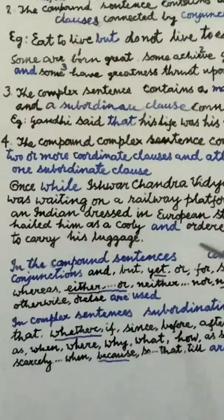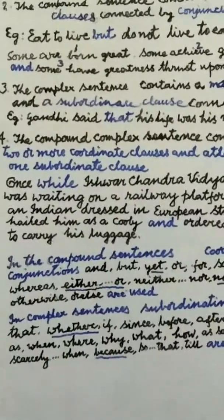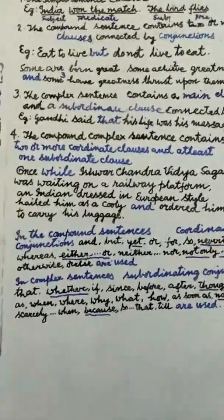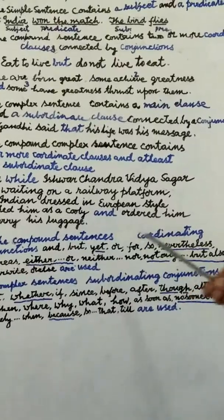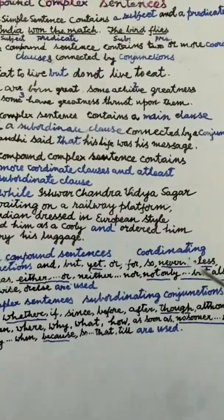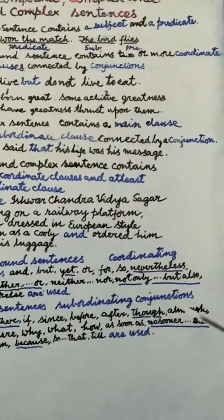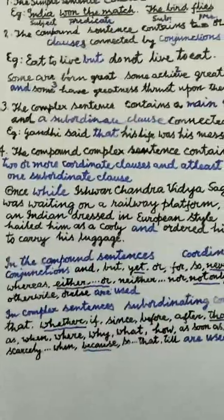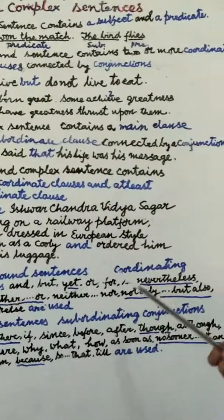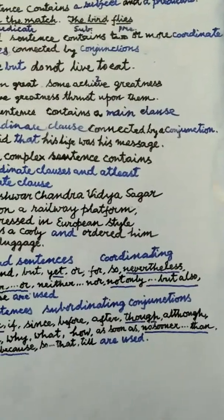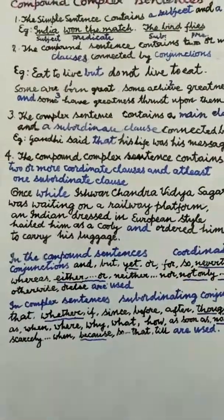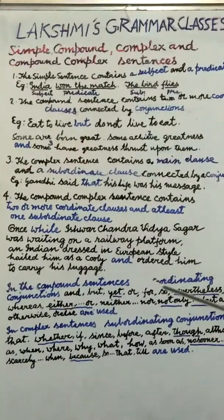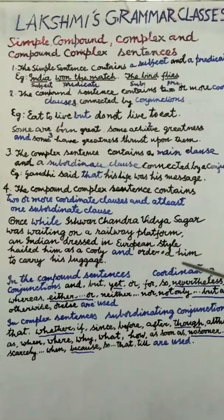In compound sentences, coordinating conjunctions are used: and, but, yet, or, for, so, nevertheless, whereas, either…or, neither…nor, not only…but also, otherwise, or else. These conjunctions are used in compound sentences.